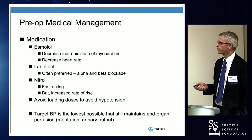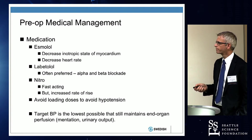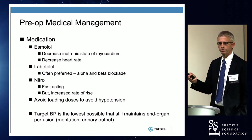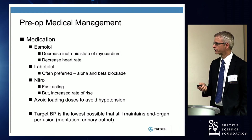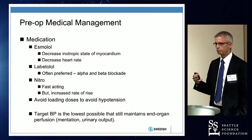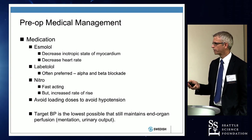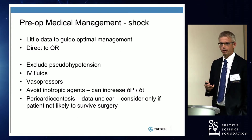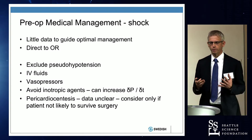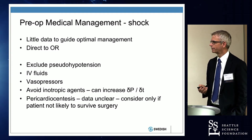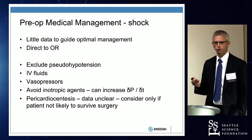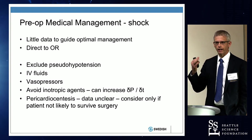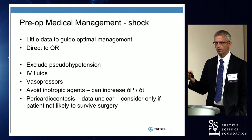The therapy to start with is a beta blocker like esmolol or labetalol. Once heart rate is adequately reduced, if blood pressure still hasn't come down, we can add additional blood pressure-lowering agents. We want to target a heart rate around 60 to 70 and a blood pressure around 100 to 120, while also maintaining end-organ perfusion. If the patient has shock, we give IV fluids and vasopressors, avoiding inotropic agents because they increase contractility and can propagate the dissection.